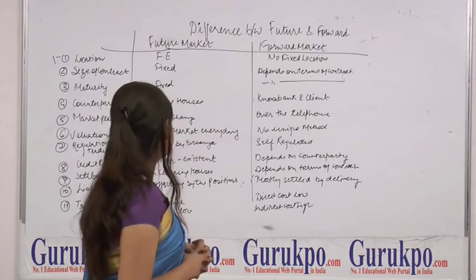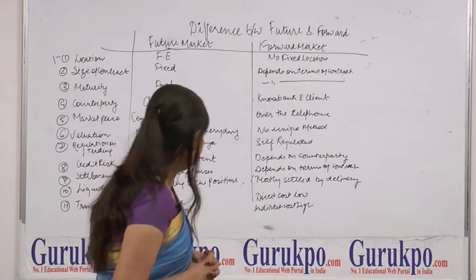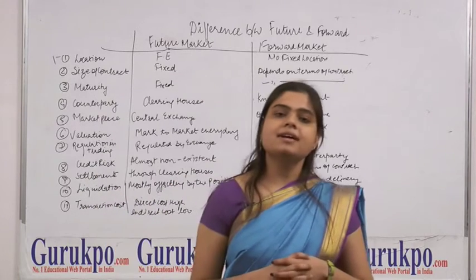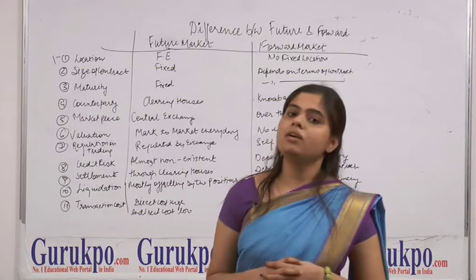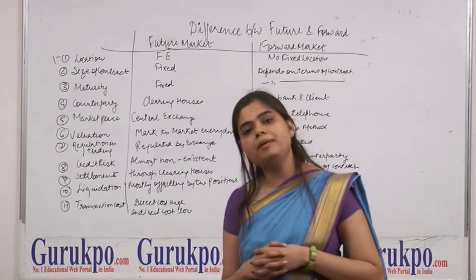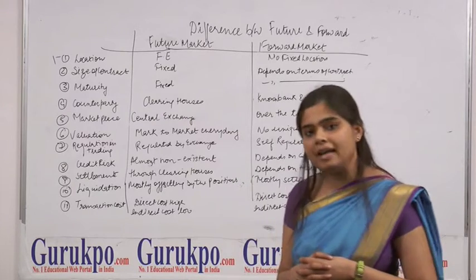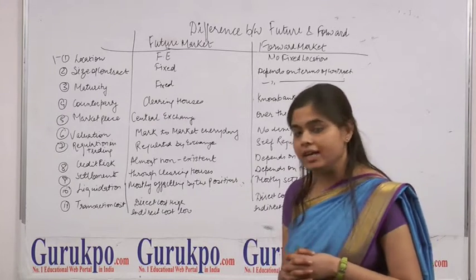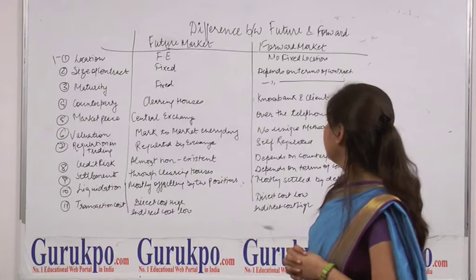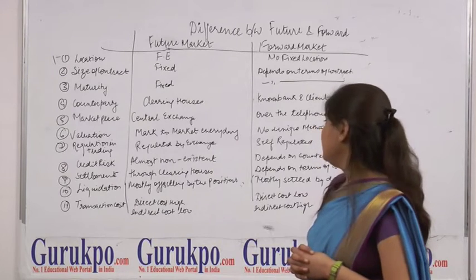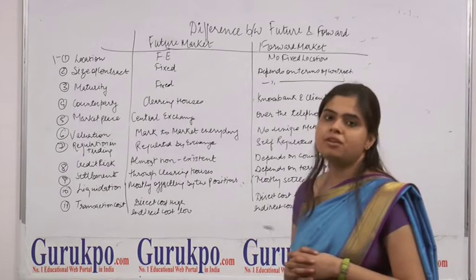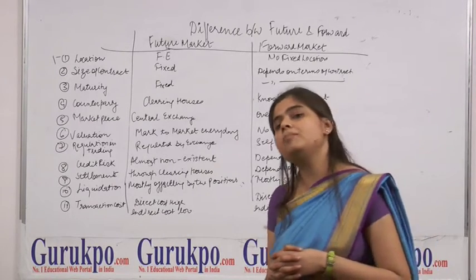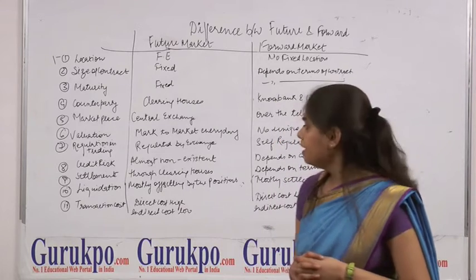The next difference is settlement. In the futures market, contracts are settled with the help of clearing houses, which play the role of intermediary between buyers and sellers. In the forward market, settlement totally depends on the terms of the contract.